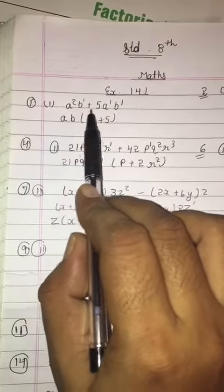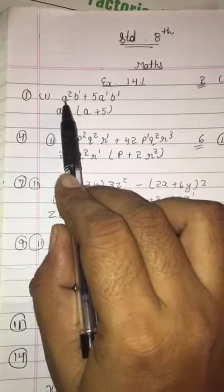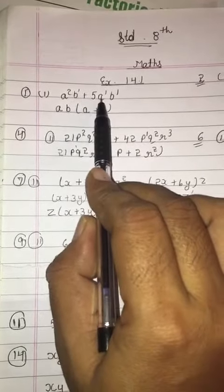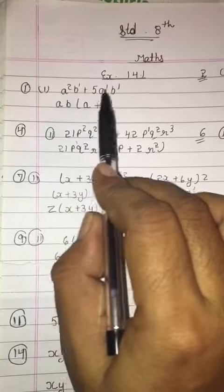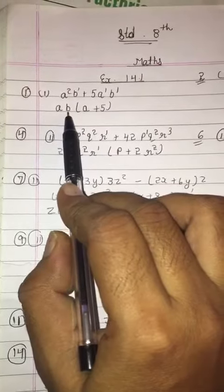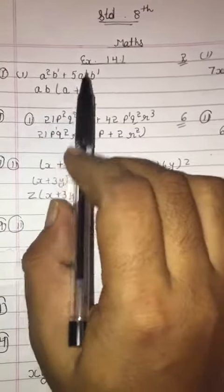We can take out a as common from a² and a. Similarly, b is here and here, so b will come out as common, and inside we get a + 5 as the answer.